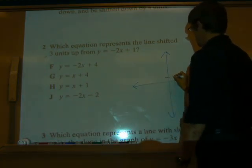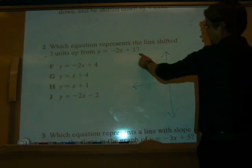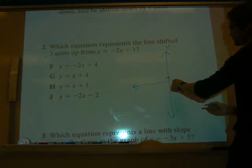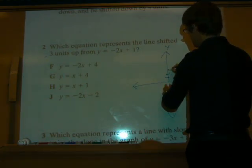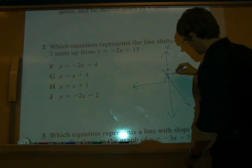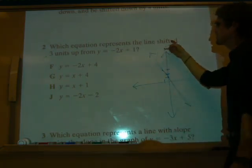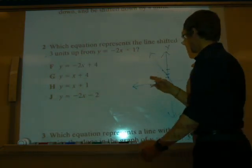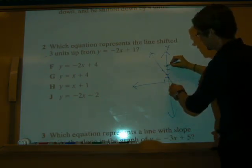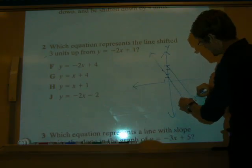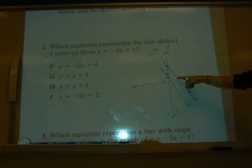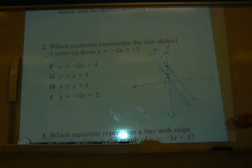So negative 2x plus 1, that's going to be your positive 1. And remember, your y-intercept, the place it crosses the y-axis. Negative 2x plus 1, I'm going to approximate up 2 over 1. It's going to be something like this. So if this line is shifted 3 units up, well, we're going to go 3 units up. 1, 2, 3, to here. It doesn't say anything about changing the slope. So this would be this line shifted 3 units up would become that line.